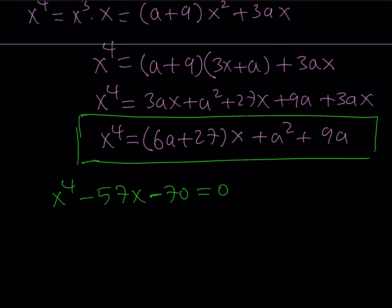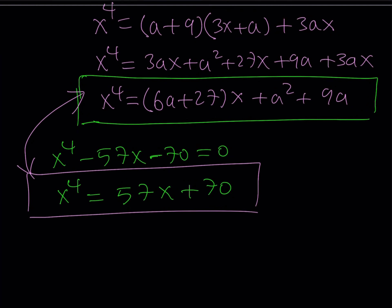Now, this is my expression x⁴. Let's go ahead and isolate x⁴ here. It's going to be 57x + 70. Now, what I want to do is I want to associate these two expressions. Since both of them are equal to x⁴, and this is true for all values of x because these are polynomials, I can safely say that these expressions are equal. So let's write it as (6a + 27)x + a² + 9a = 57x + 70.